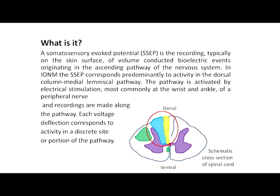Sensory evoked potentials — the ascending dorsal column sensory pathway. The definition: a recording of volume-conducted events, usually from the skin surface, of the ascending pathway of the nervous system — dorsal column and medial lemniscal pathway after it decussates. Activated usually by electrical stimulation at the wrist and ankle, where we have good access to very superficial nerves peripherally. This allows a strong signal at the beginning so we can record it, and each part along the pathway produces a deflection representing a discrete anatomical site.